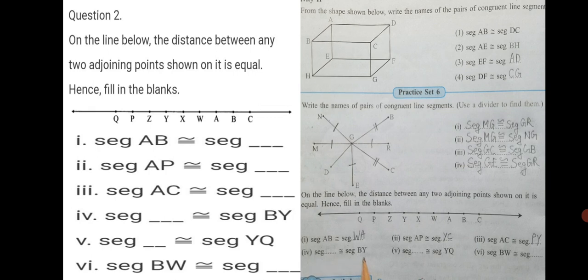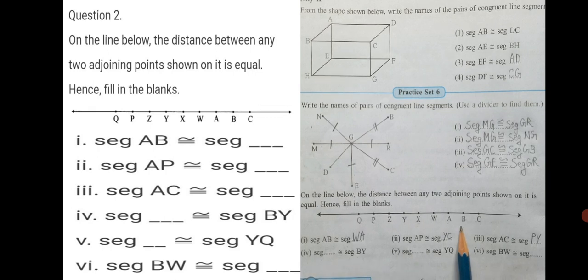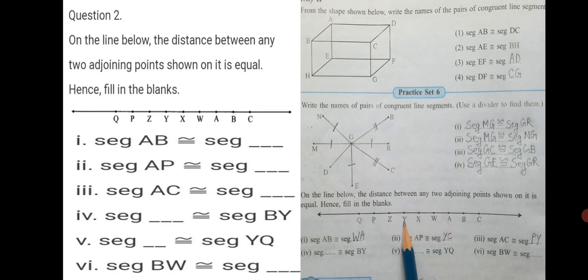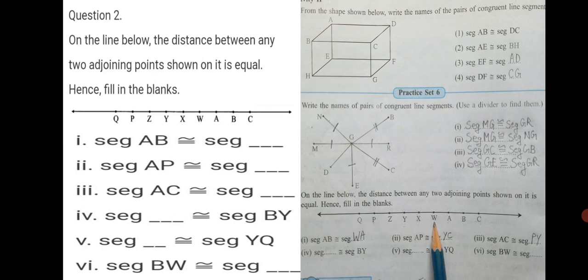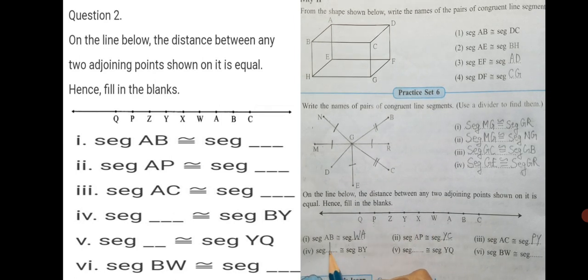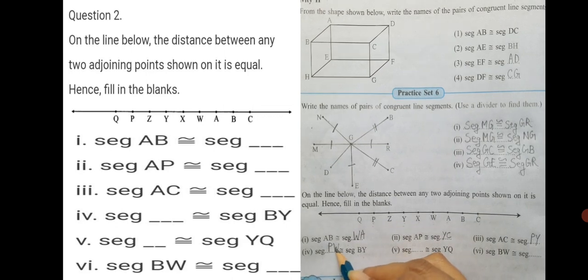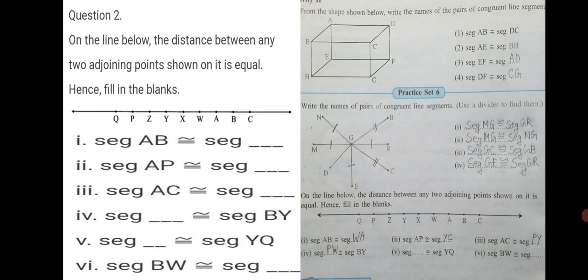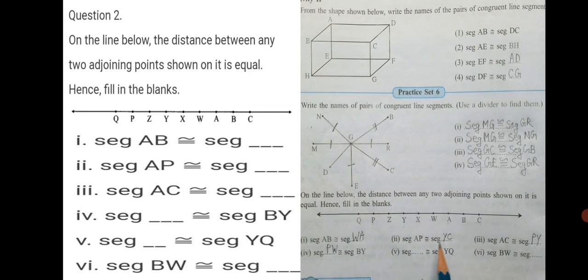Now, BY, seg BY. Check seg BY. B to Y. How many points? 1, 2, 3, 4, 5 points are covered. Take any letter and cover 5 points. See where you reach. 1, 2, 3, 4, 5. From P to W. PW. I will write seg PW is congruent to seg BY. We have to match that many points as many in the question.